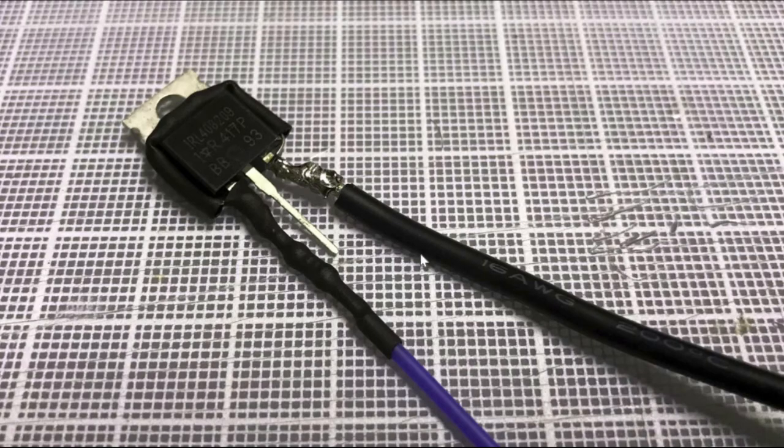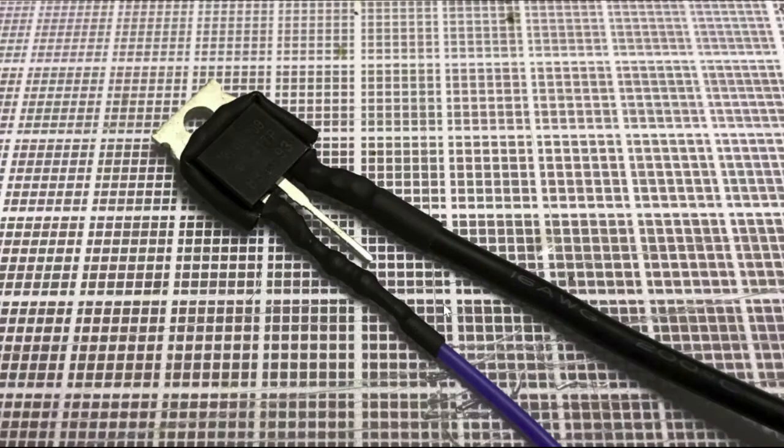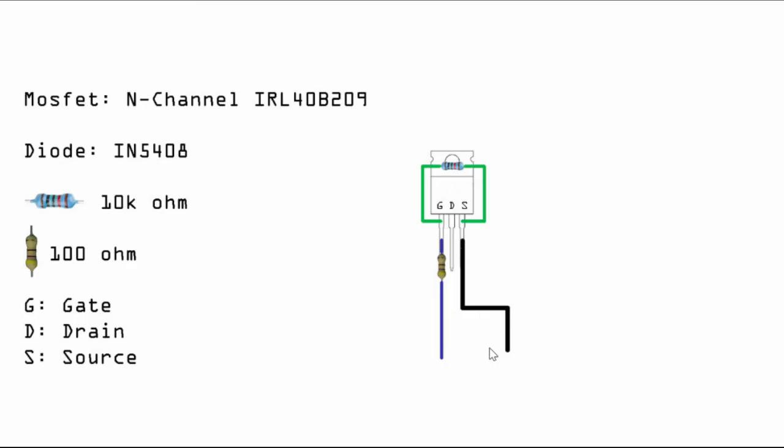I'll just solder the black wire and then heat shrink it.